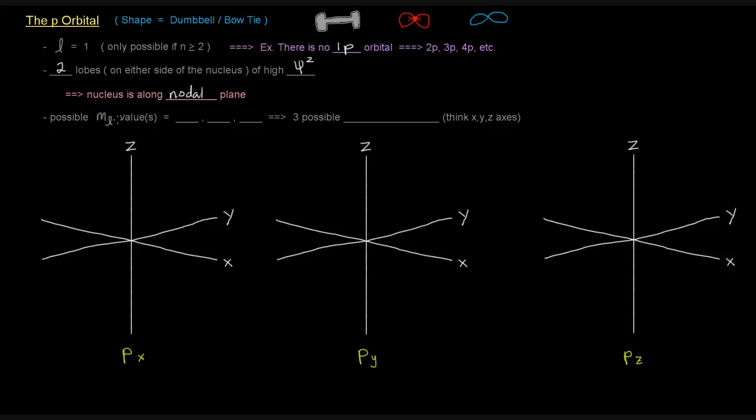So the possible m sub L values of the p orbital are negative L to L, so that would be negative 1, 0, and positive 1, which means that there are three possible orientations in 3D space for the p orbital.